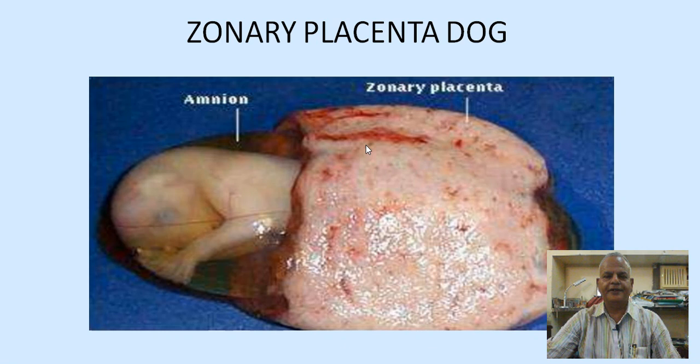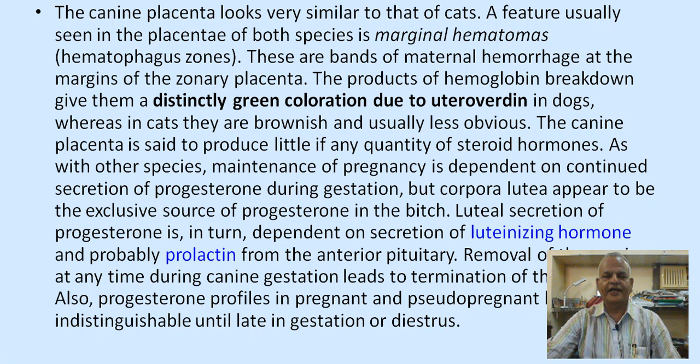This is the zonary placenta seen in dogs. This is the fetus, this is the amnion, and this is the zonary placenta. The canine placenta looks very similar to that of cats. A feature usually seen in the placenta of both species is the marginal hematoma, or hematophagous zones — bands of maternal hemorrhage at the margins of the zonary placenta. The products of hemoglobin breakdown give them a distinctly green coloration due to uteroverdin in dogs, whereas in cats they are brownish and usually less obvious.